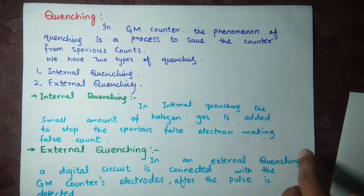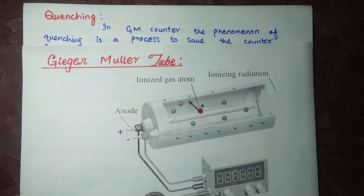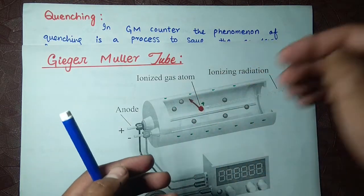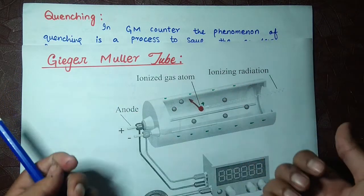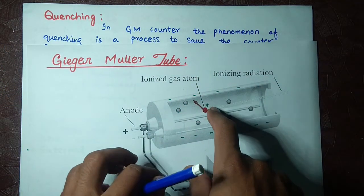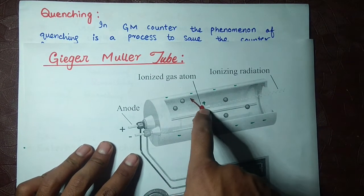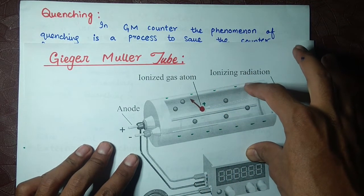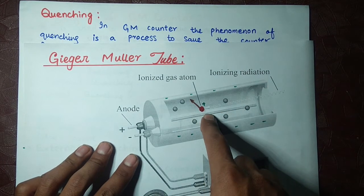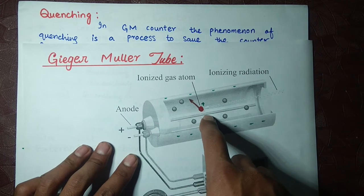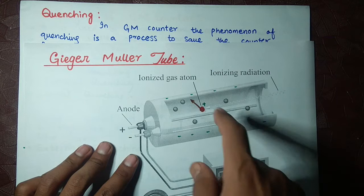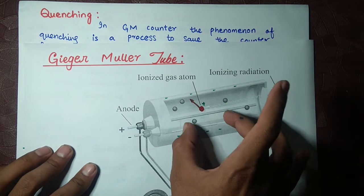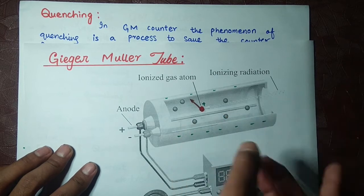For example, we use Br₂ — bromine. When an electron comes, the bromine absorbs its energy and breaks apart. Then it recombines. When the energy of the electron is absorbed by the bromine, which is present in vapor form in the tube, the electron cannot go to the anode.